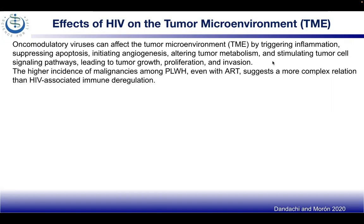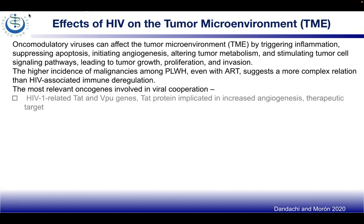There is a higher incidence of malignancies among people living with HIV even with ART, or antiretroviral therapy, suggesting it's more complex than just an HIV-associated immune dysregulation. Certain oncogenes are more relevant in viral cooperation, including HIV-1 related Tat and Vpu genes. Tat is implicated in increasing angiogenesis, which could be a therapeutic target. There's also EBV LMP1 and EBNA2 genes.